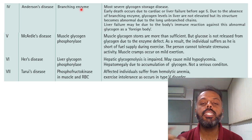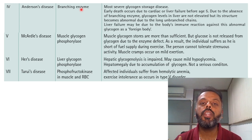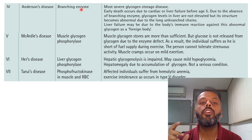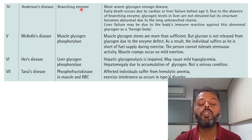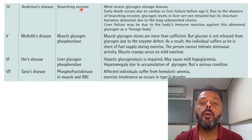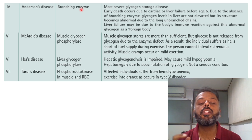Type 5 Glycogen Storage Disease is McArdle's disease, occurring due to deficiency of muscle glycogen phosphorylase. Because of this deficiency, muscle glycogenolysis is defective, and there is no release of glucose from glycogen stored in the muscle. This results in exercise intolerance — the person cannot tolerate strenuous activity — and muscle cramps occur on mild exercise.